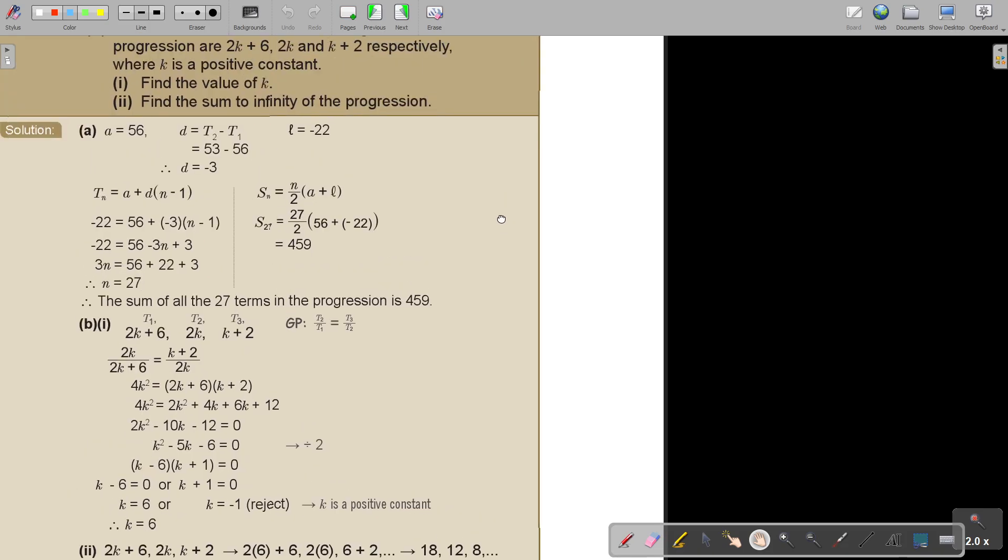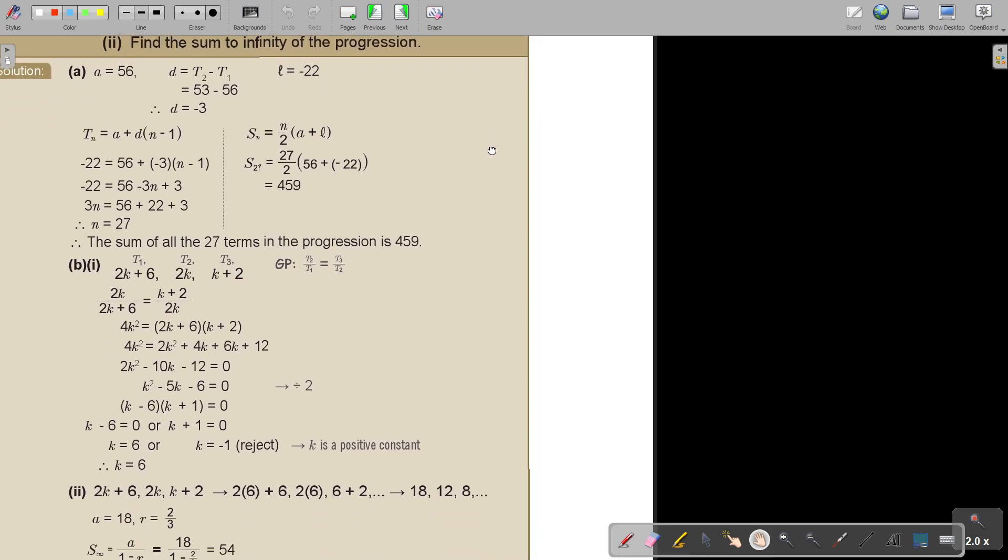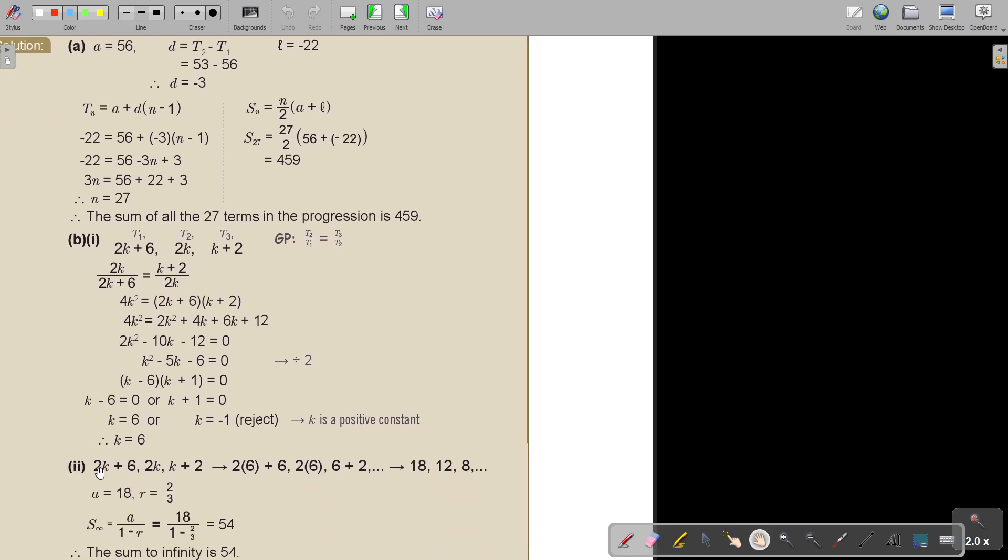Now I continue. I find the value of k and I find the sum to infinity. So now first substitute the value of k. So if I substitute, I say 2 times 6 plus 6 and this one is 2 times 6 and this is 6 plus 2 and there's my value.